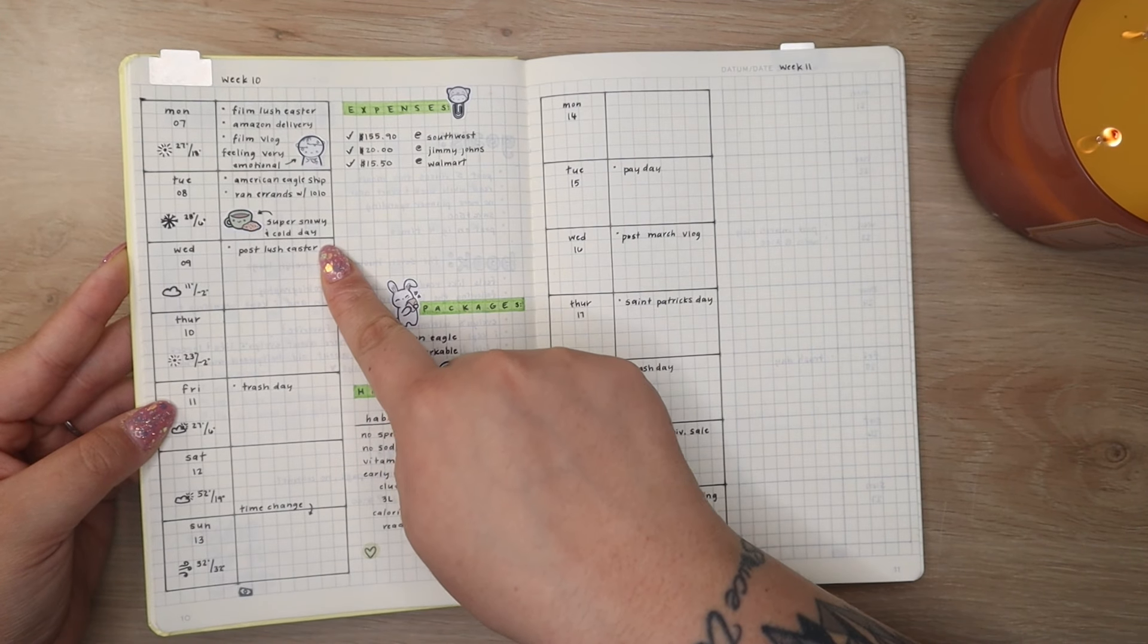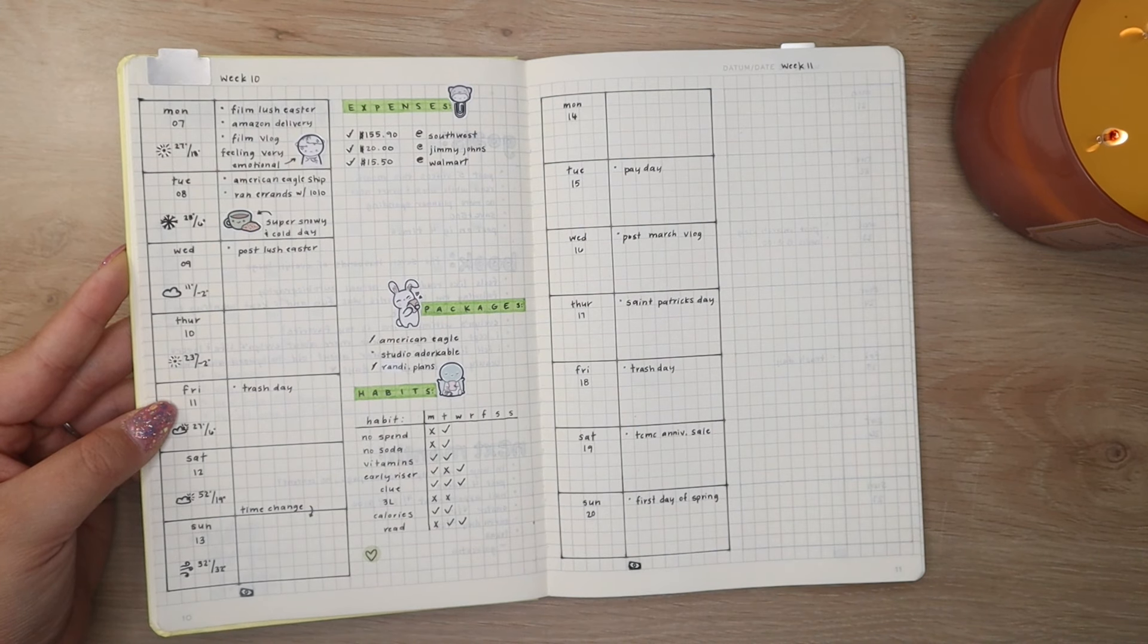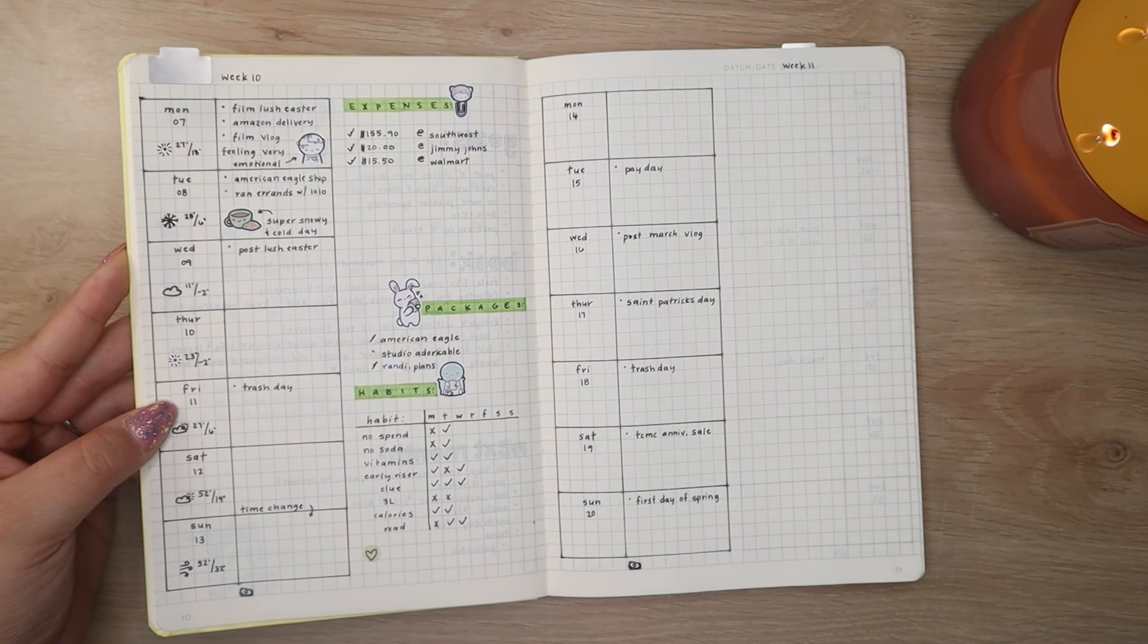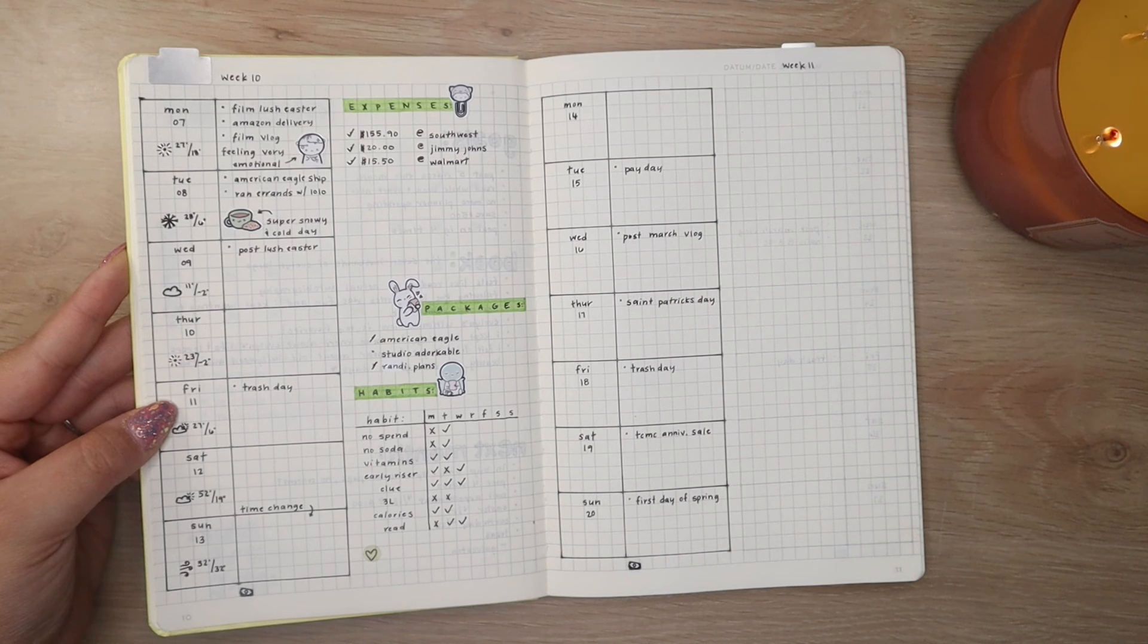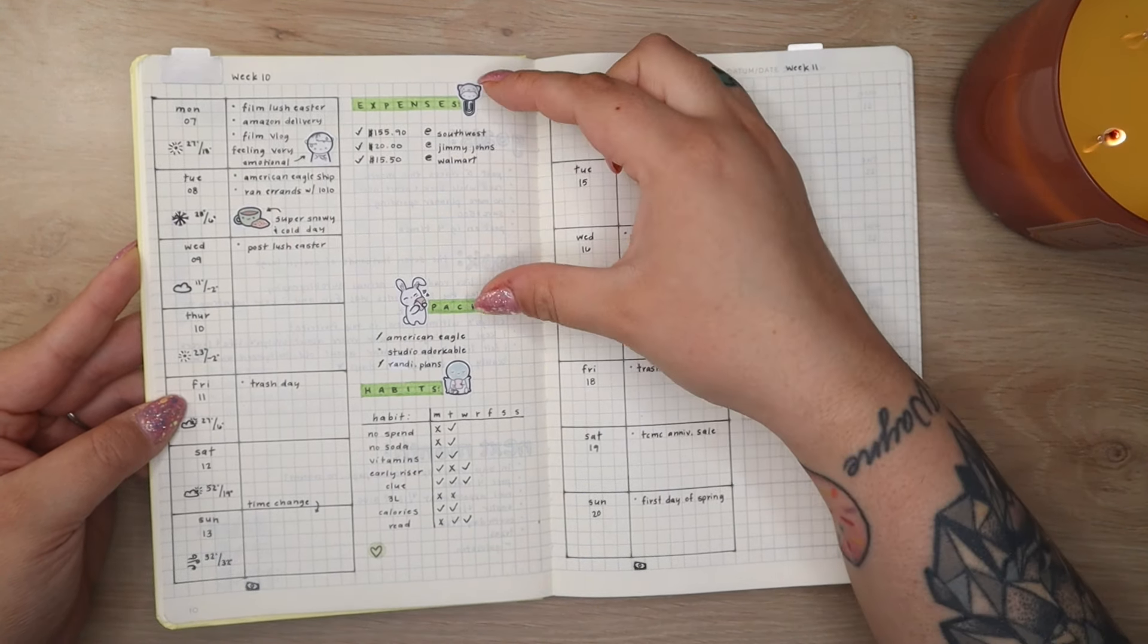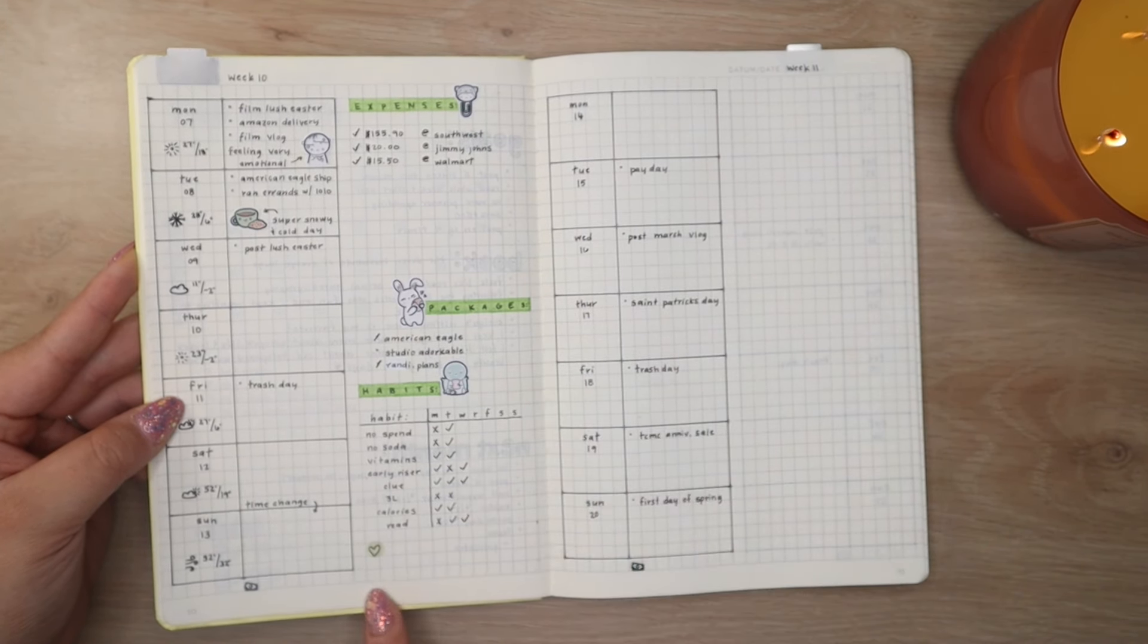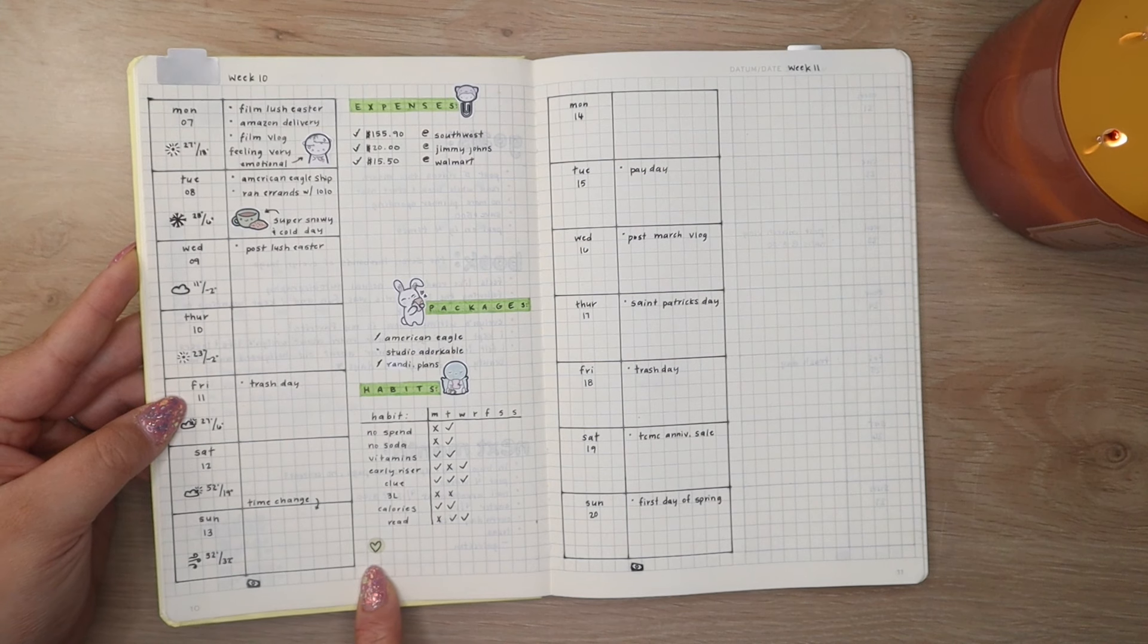So for example, yesterday was a super snowy and cold day. So I wrote that down and I got a shipping notification about one of the packages I was waiting on. And then I also ran errands with my husband. So that's the kind of stuff I'm putting in there. I also have expenses tracker, package tracker, and habit tracker, as well as a little memory section down here.